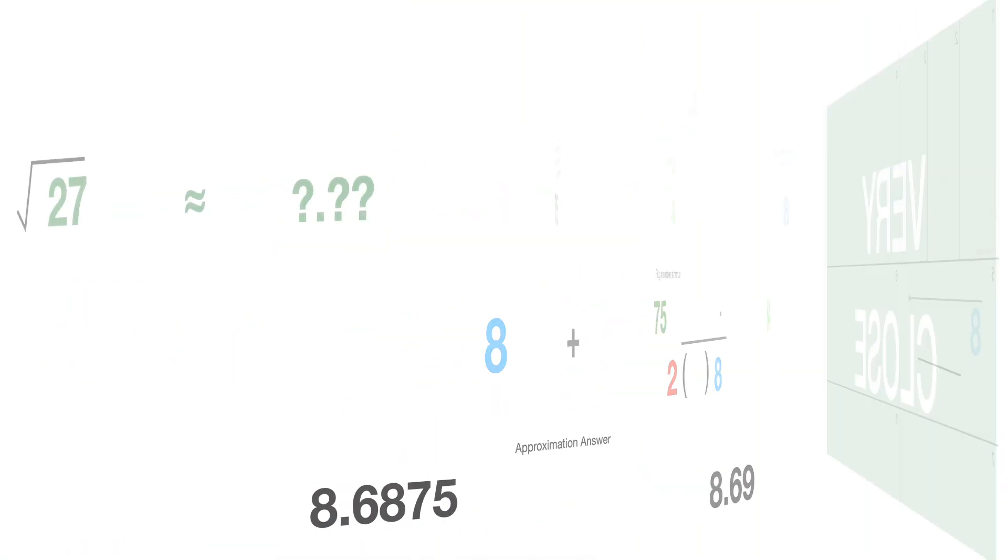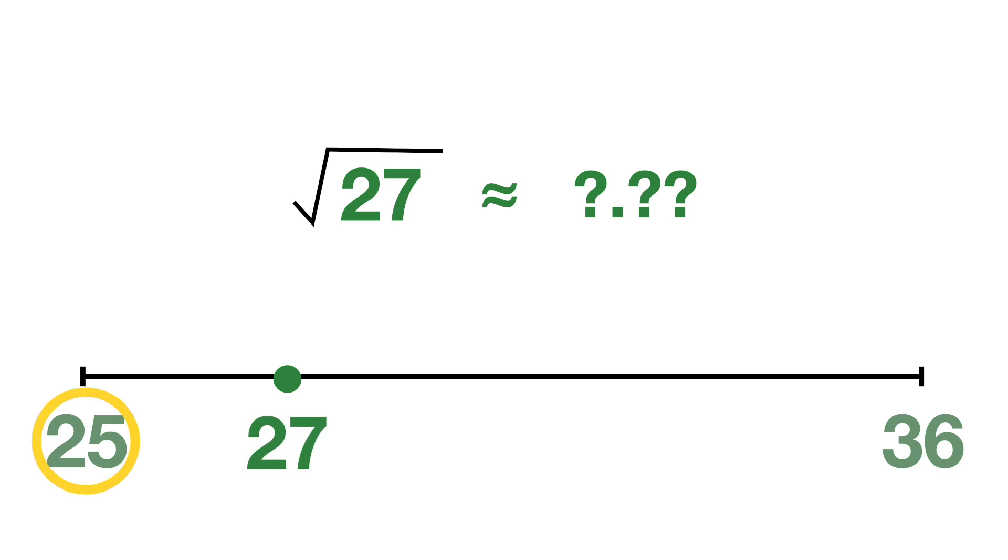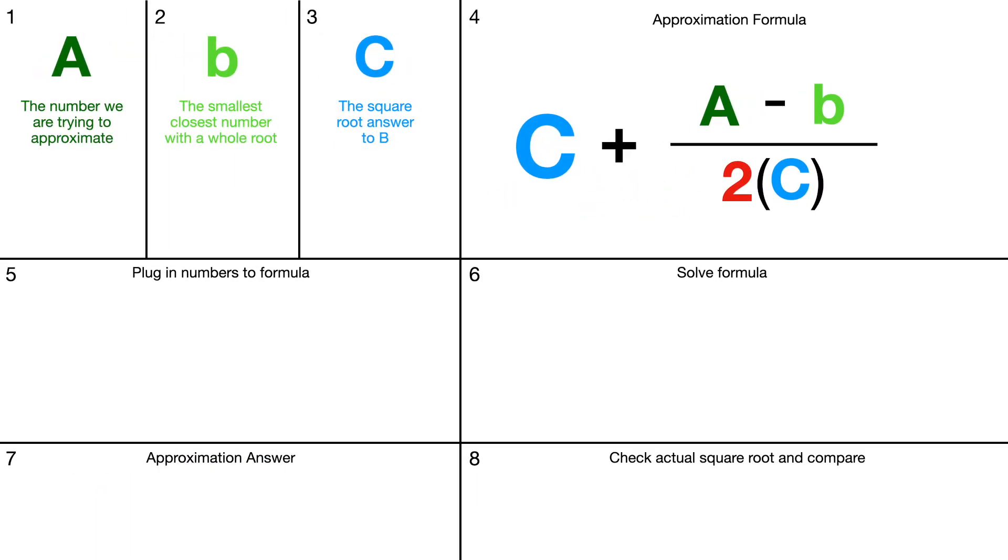Let's do one more example so you get the hang of it. We're going to approximate the square root of 27. On our number line, 27 is right there. The smallest closest number with whole roots is 25. Let's go back to our chart.